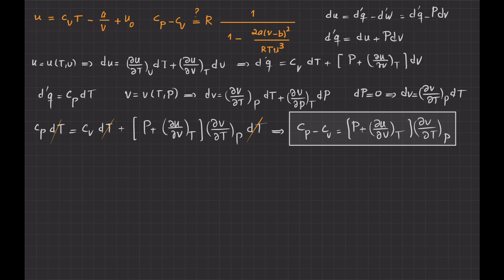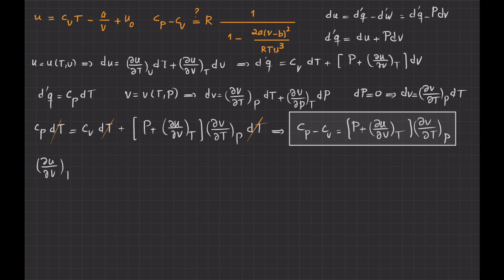I need to differentiate U with respect to volume when temperature is kept constant. U-naught is a constant so its derivative is zero; T is kept constant; and C_V is given as constant, so its derivative is also zero. The only term to differentiate is the middle term, minus A over V. Comparing to the derivative of 1/x being minus 1/x-squared, the partial derivative of U with respect to V at constant T is simply A over V-squared.